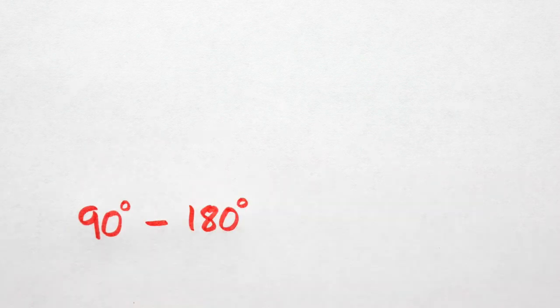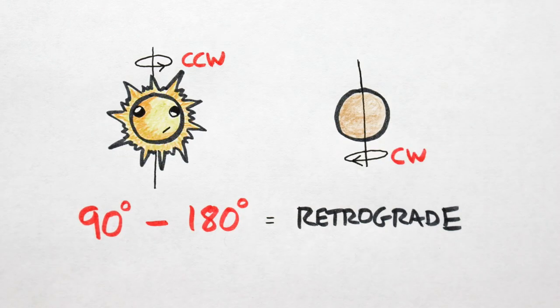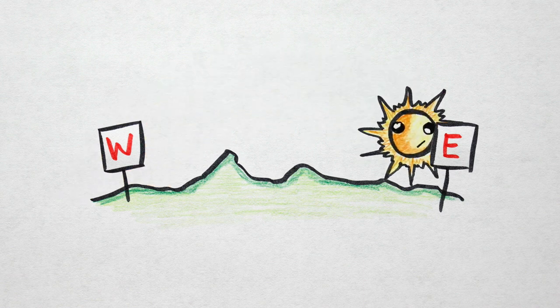Between 90 and 180 degrees, planets will have retrograde spins. So on Venus, for example, the sun will be all backwards, rising in the west and setting in the east.